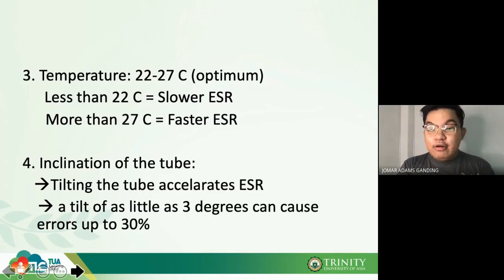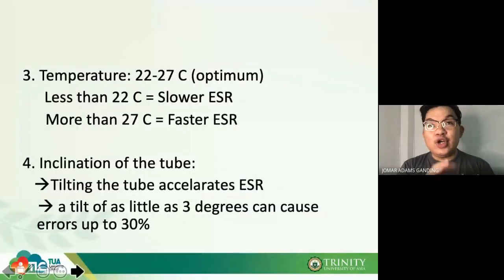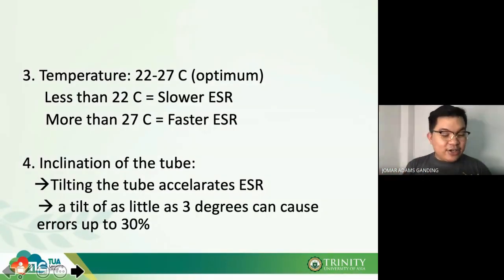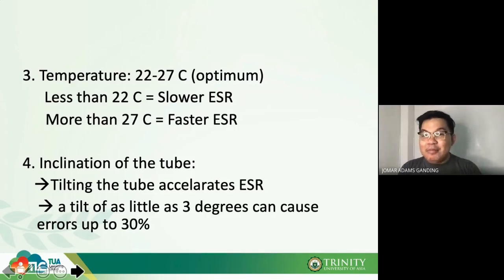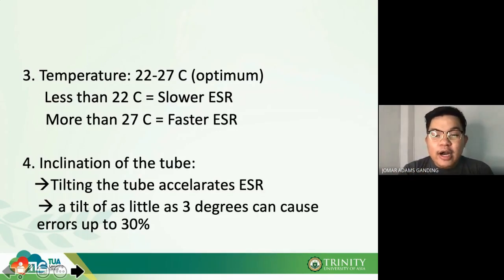Normal ESR values: zero to 30 mm/hour for males; zero to 40 mm/hour for females. It is possible to perform ESR and have a result of zero — that is still within normal range. We'll discuss how to read the results shortly.